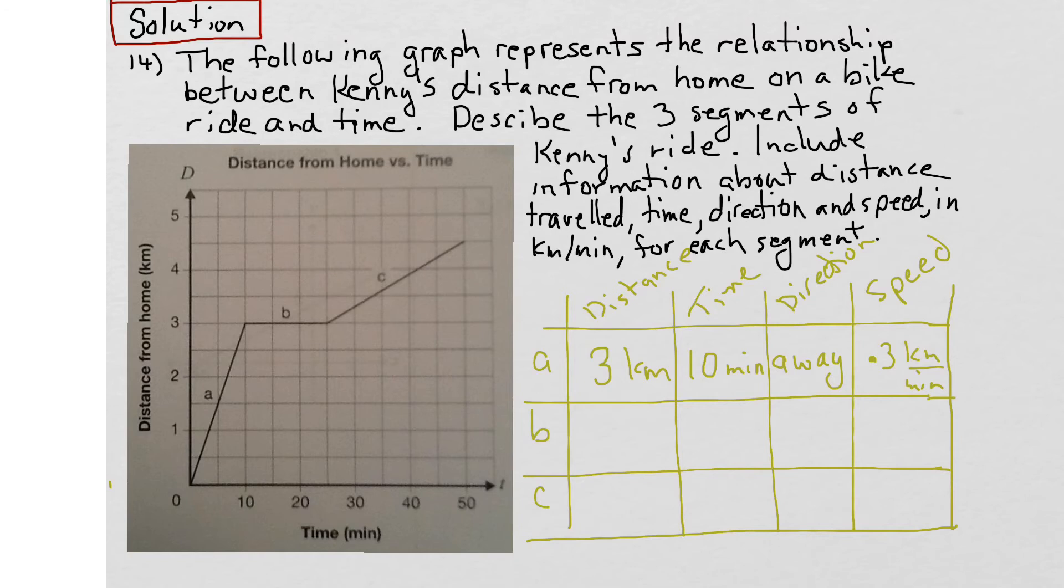Let's look at segment B, which is represented by this line on the graph. Let's start with distance. Kenny started at three kilometers away from home, and at the end of the B segment, he ended up three kilometers away from home. Therefore, he traveled zero kilometers in total.